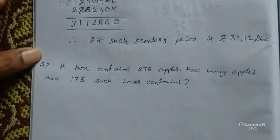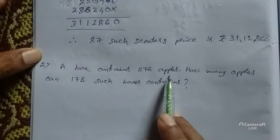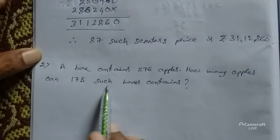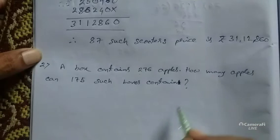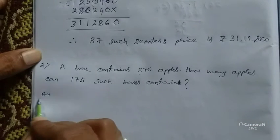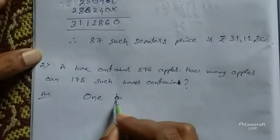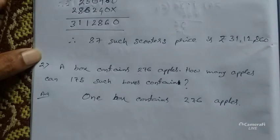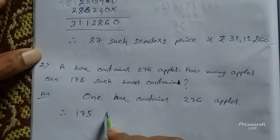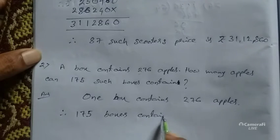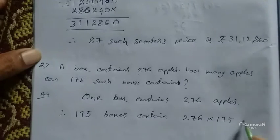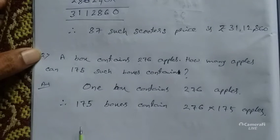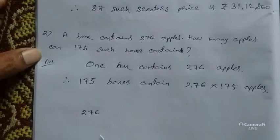Coming to the next word problem, number 2: a box contains 276 apples. How many apples can 175 such boxes contain? One box contains 276 apples. Therefore, 175 boxes contain 276 × 175 apples. The number of apples will increase, so here also we have to multiply. Let us multiply 276 by 175.